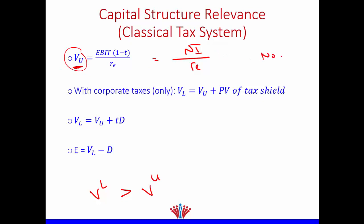Remember, unlevered means there is no debt. If there is no debt, net income equals EBIT multiplied by (1 − t), because there is no interest. Therefore, we can rewrite the formula as EBIT × (1 − t) divided by cost of equity — this is the value of the unlevered firm.